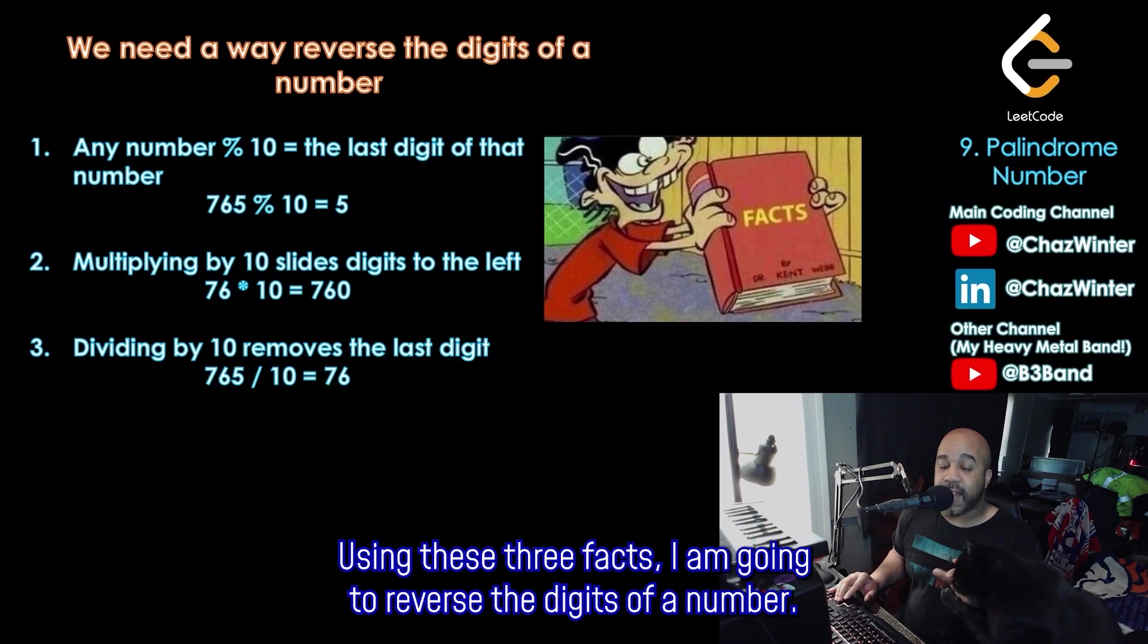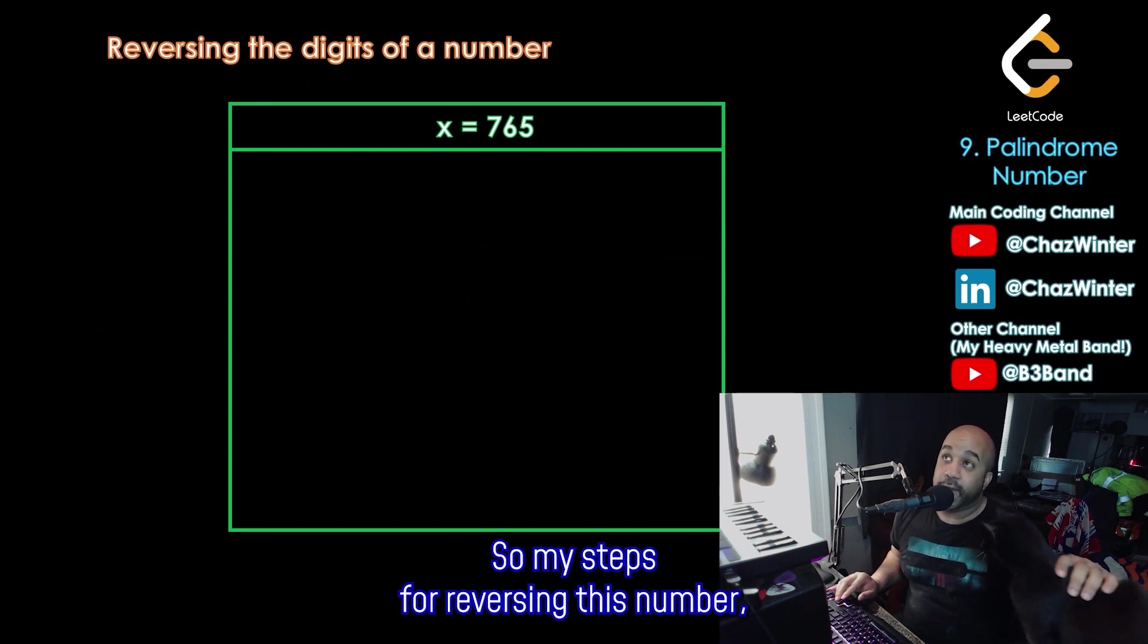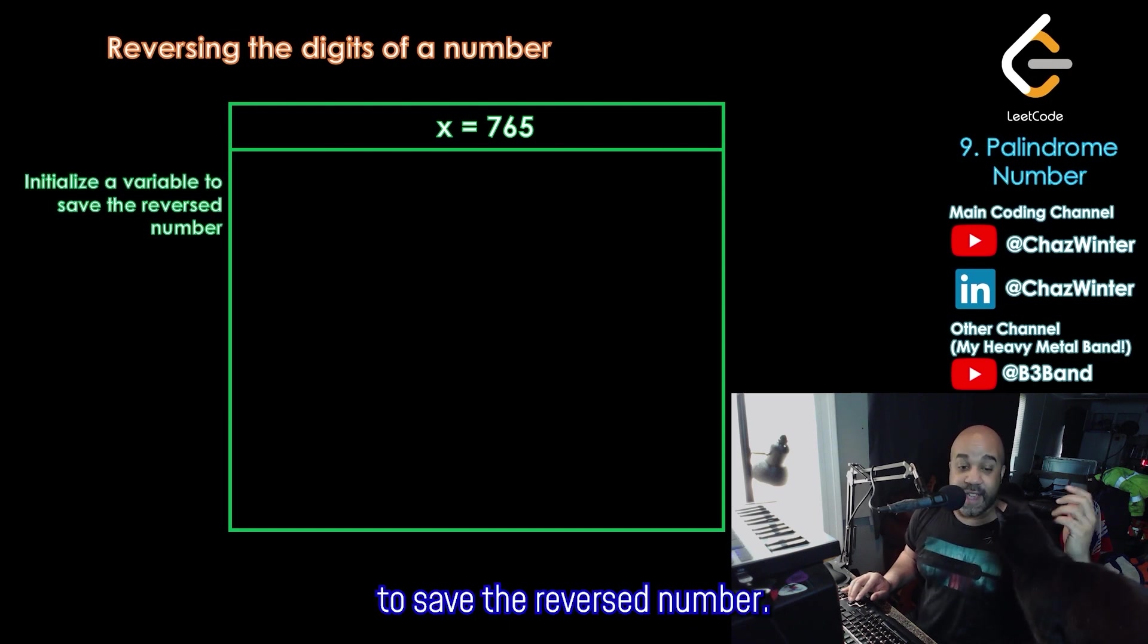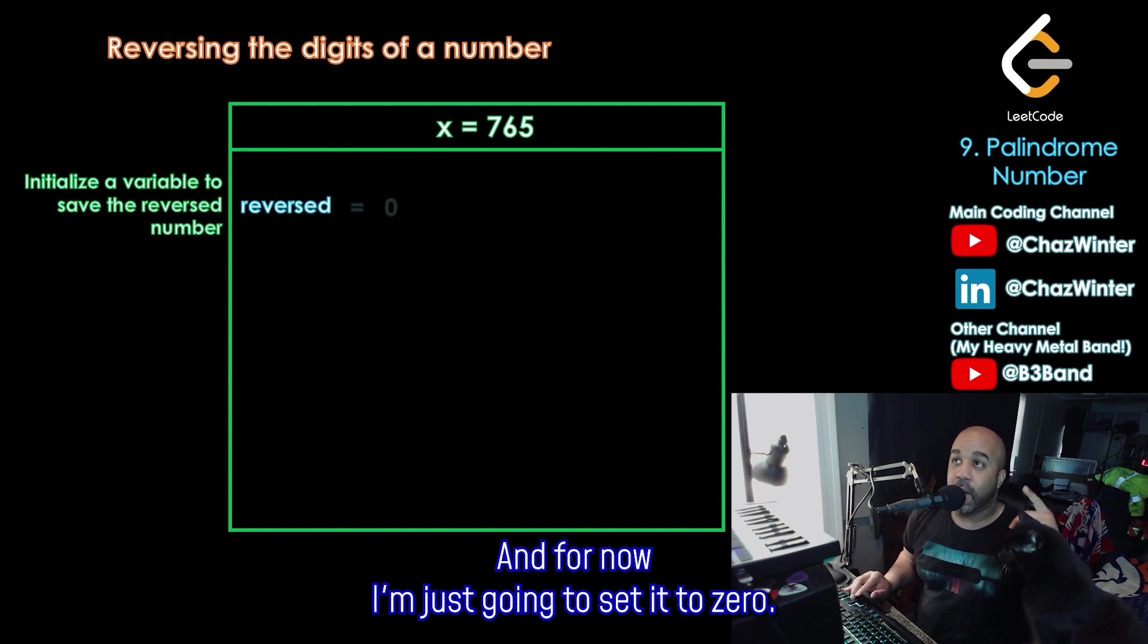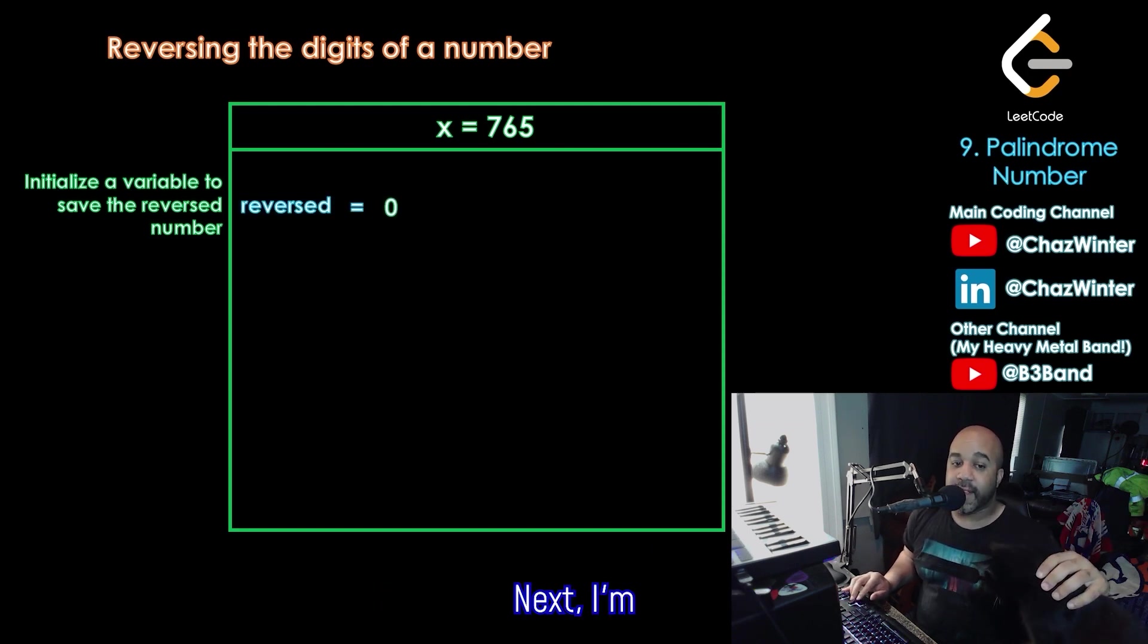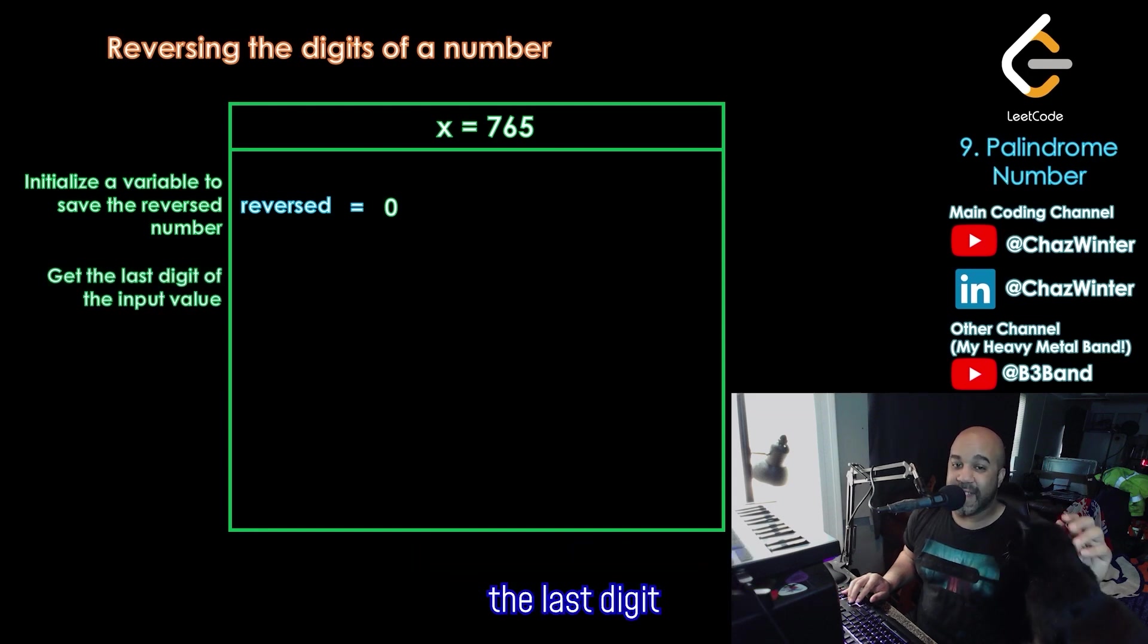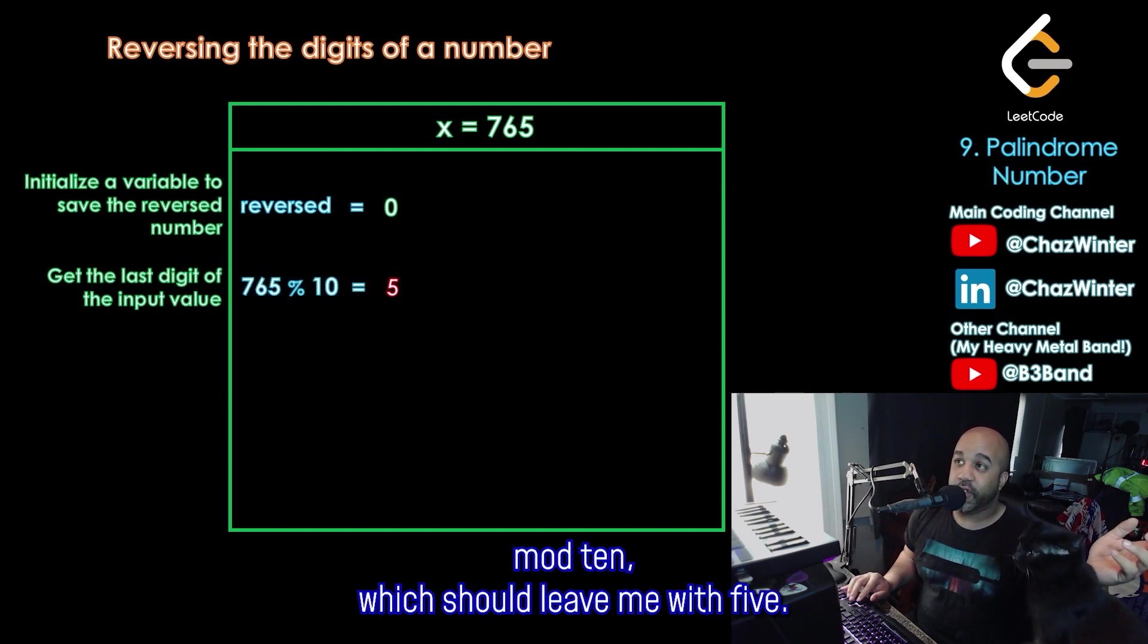Using these three facts, I am going to reverse the digits of a number. So let me show this to you in a little chart here. So my steps for reversing this number, I'm going to start by initializing a variable to save the reverse number. So I'll create an integer called reversed. And for now, I'm just going to set it to zero. Next, I'm going to get the last digit of the input value. And we said that we can isolate the last digit by using mod 10.